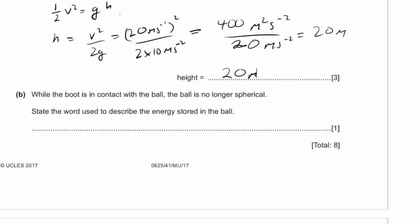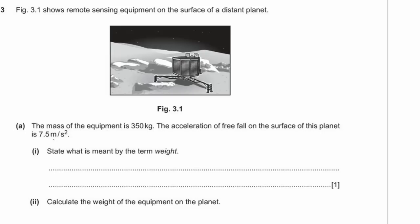Part B: while the boot is in contact with the ball, the ball is no longer spherical. The word used to describe the energy stored in the ball due to the change in shape is elastic potential energy, or elastic energy.